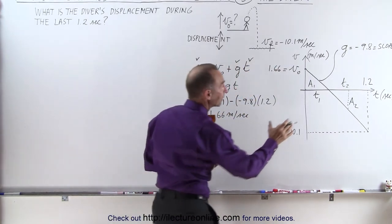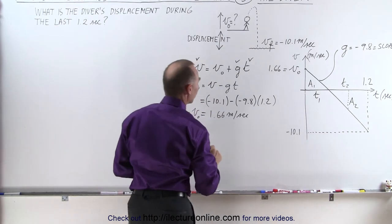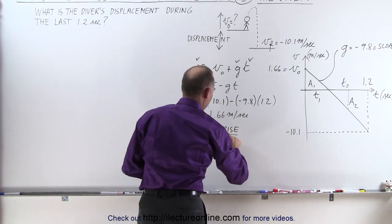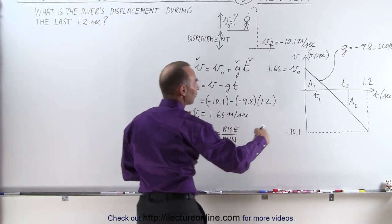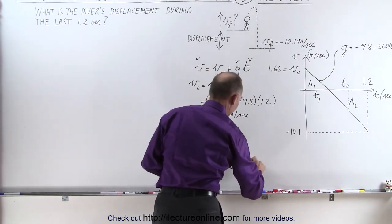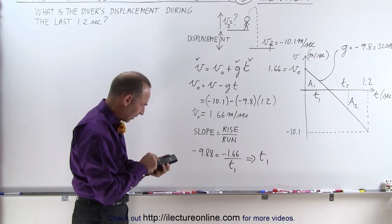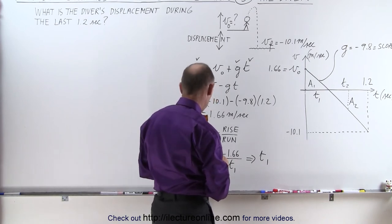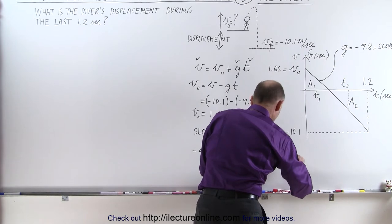Now that we have the initial velocity, we can calculate t1 — the time for the diver to reach maximum height. Using the slope equation, slope equals rise over run, and the slope is minus 9.8. The rise is minus 1.66 and the run is t1, so t1 equals minus 1.66 divided by minus 9.8, which equals 0.1694 seconds.